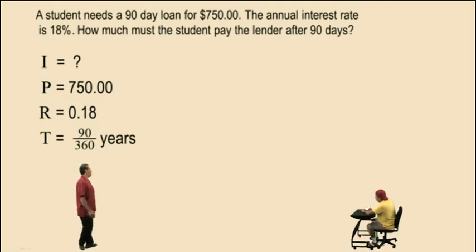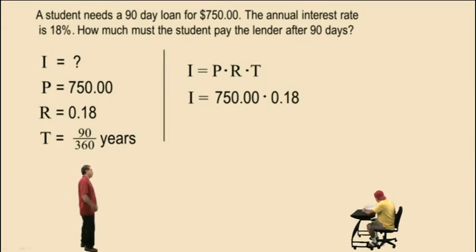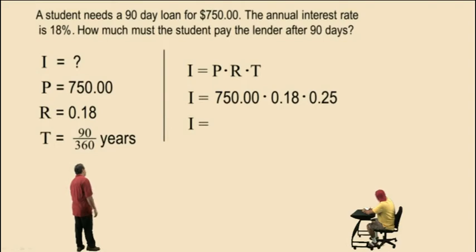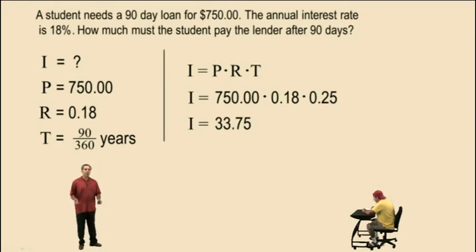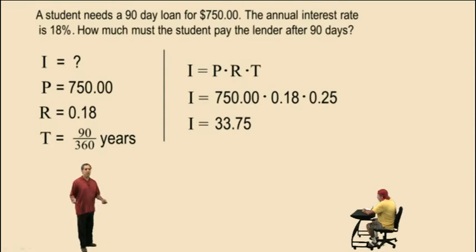Let's perform our calculation. The principal is $750. The interest rate as a decimal is 0.18. And the time in years is 90 divided by 360, which is 0.25 — one-fourth. So Charlie, what's 750 times 0.18 times 0.25? $33.75. When talking about dollar amounts, we always round to the nearest hundredth. So the interest is $33.75.